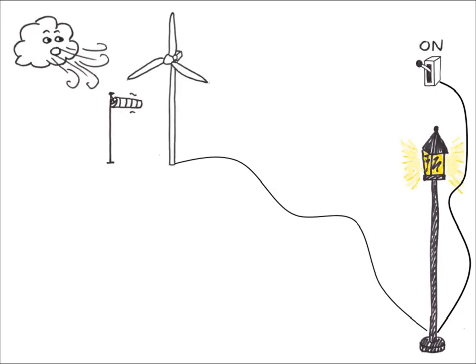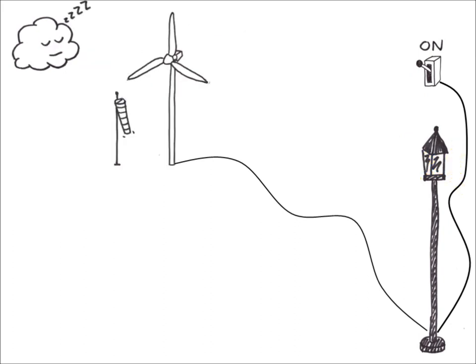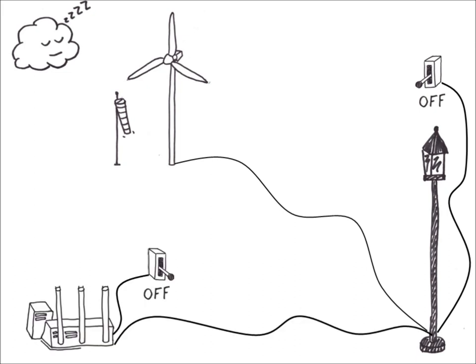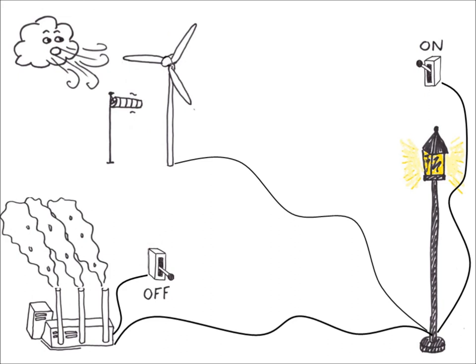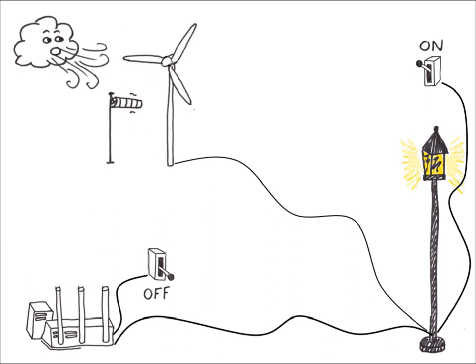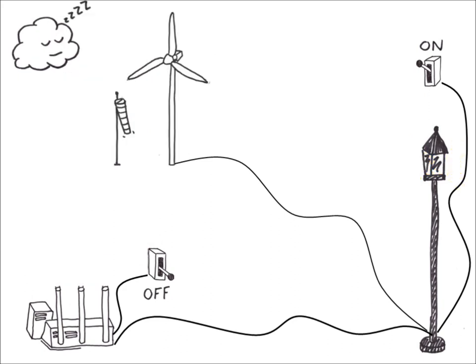The large scale development of renewable energies is however limited because they are intermittent. For example, for wind turbines, when there is no wind, there is no electricity. In such a situation, the usual way to produce electricity is to switch on conventional plants, by burning gas or coal, which contribute to global warming.